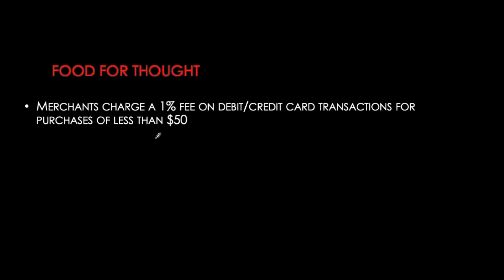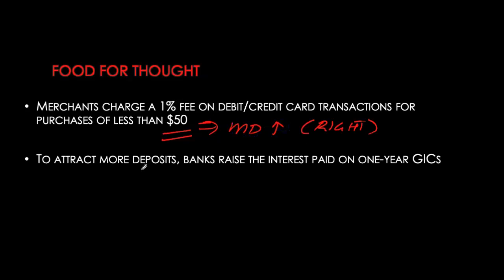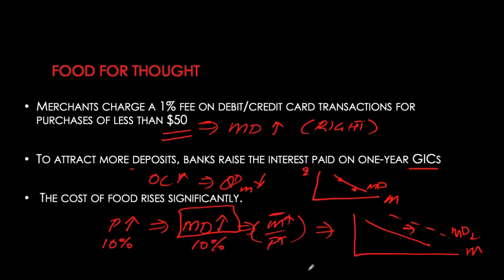Let's look at some examples. First: merchants charging a 1% fee on all debit and credit card transactions for purchases under $50. People who typically spend small amounts would want to hold more cash to avoid this fee, so demand for money balances increases. Second: banks raising the interest rate paid on one-year GICs to attract deposits. Here the opportunity cost of holding money goes up, so quantity demanded decreases — this is a movement along the curve, not a shift.